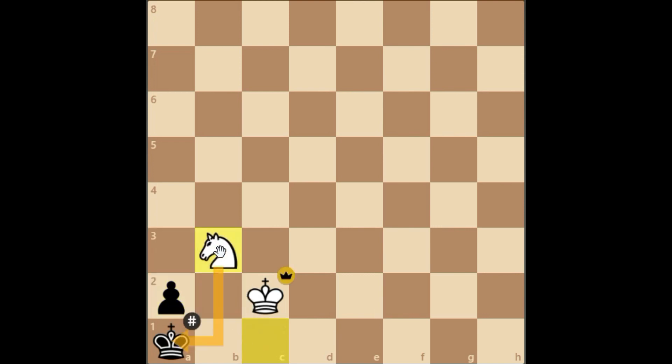And after that, knight b3 checkmate. This usually happens during a blitz game where people try to queen their rook pawn and end up in this position.